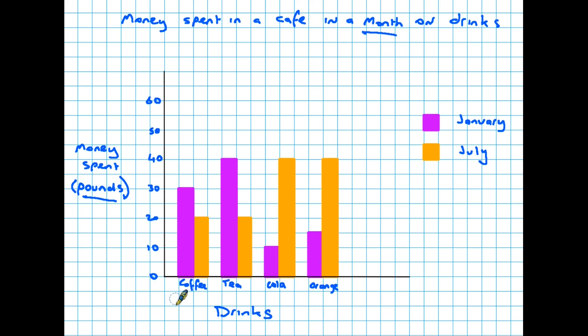It's got two bars for each category and what it's doing is not only telling us how the drinks compare to each other, it's telling us how things change between January and July. So for instance the coffee and the tea sales are higher than the cold drinks in January, presumably because the weather is cold. But in the summer time the sales of coffee and tea have dropped whereas the cold drinks have gone up. So there's more information and more that you can compare and analyze in a graph like this.